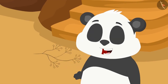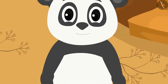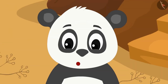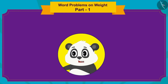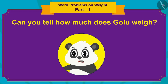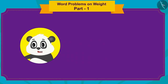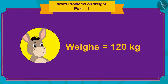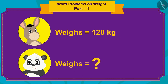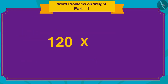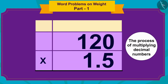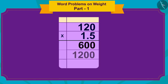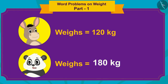Let me take my weight now. Golu stood on the scale: my weight is one and a half times your weight. Children, can you tell how much Golu weighs? Golu's weight is 1.5 times Bholla's weight and Bholla weighs 120 kilograms. To find Golu's weight, we multiply 120 by 3/2 or 1.5, giving 180 kilograms.